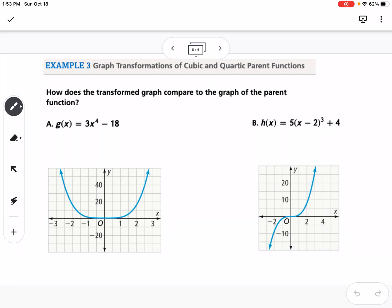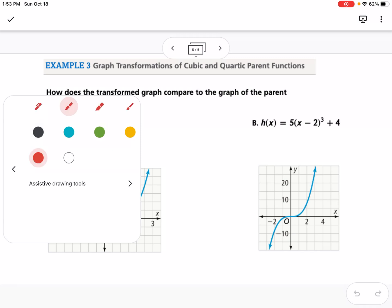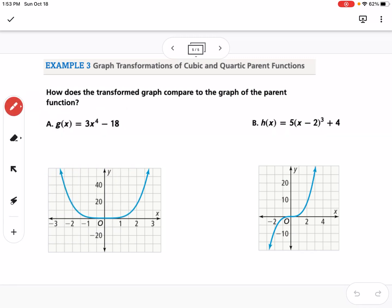The last part is to talk about transformations. So transformations with fourth-degree polynomials and cubics follow the same rules as the transformations we did with quadratics. So if we have a 3 out front here, that's going to be a vertical stretch.